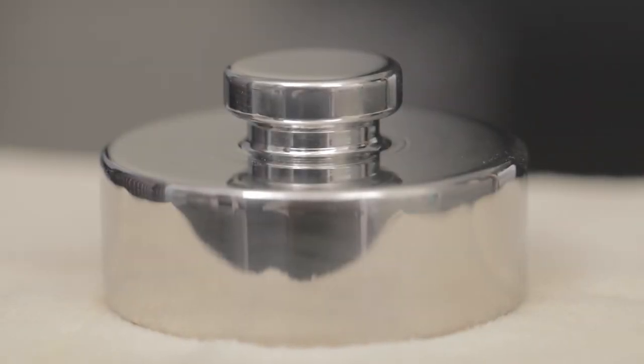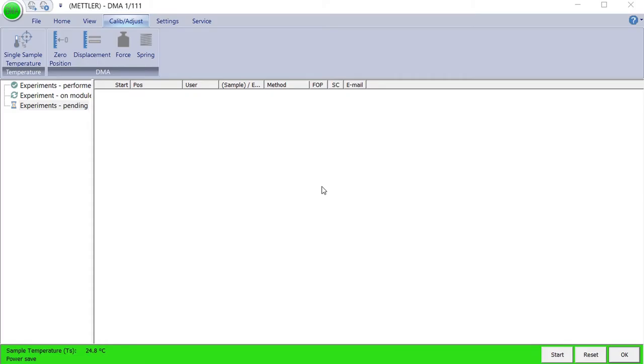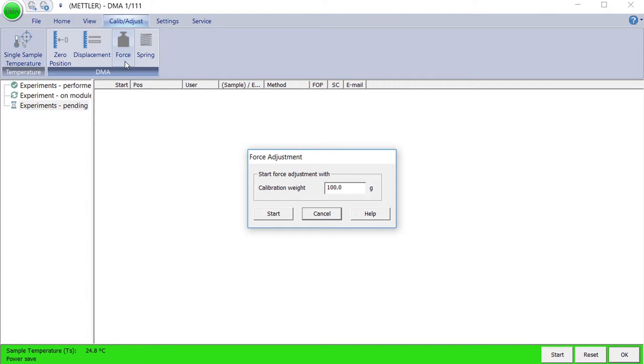And a reference weight of 100 grams. In the module window of the STAR-E software, start the adjustment by clicking Force Adjustment on the Calibration Adjust menu. Enter the correct reference weight of 100 grams and then click Start.